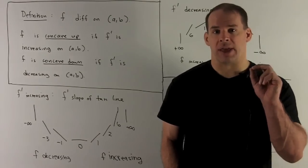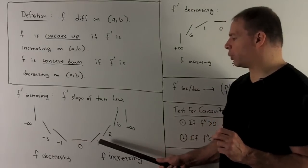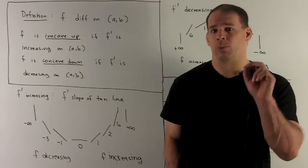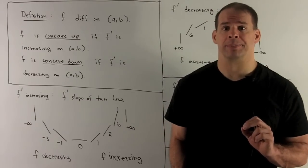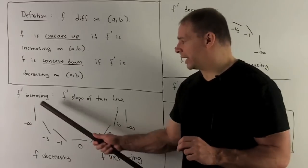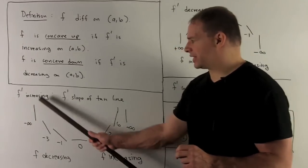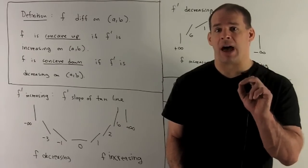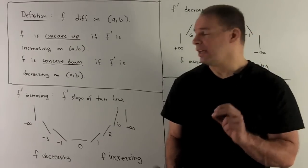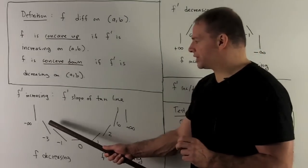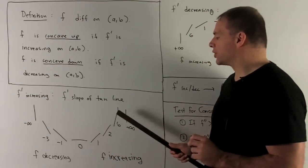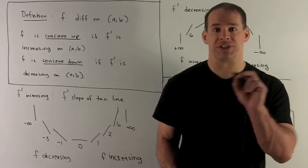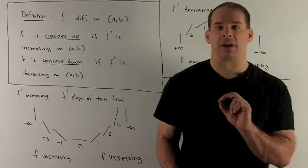The slope jumps from say minus three, to minus one, flattening out at zero where we're horizontal, then we're increasing — jumping to one, two, six, and then off to a vertical line at plus infinity. Connect the dots and we get a bowl facing up. Note that concavity isn't going to have much to say about increasing or decreasing — here we're concave up, decreasing on one side, increasing on the other. You could have all four combinations.